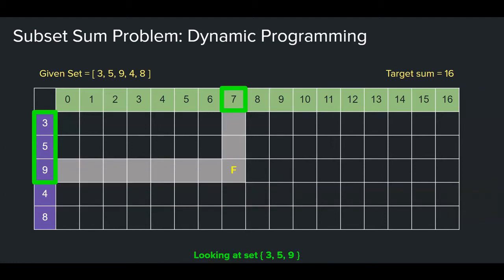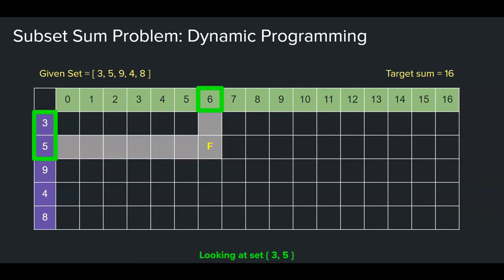This would be false because if you're looking at the set 3, 5, and 9, there is no subset of numbers in that set that adds up to 7. Like, is 3 plus 5 equal to 7? No. Is 9 plus 5 equal to 7? No. So, no subset adds up to 7, and that's why it's false. Here, this would also be false because if we're looking at the set 3 and 5, there are no subset of numbers in that set that add up to 6.